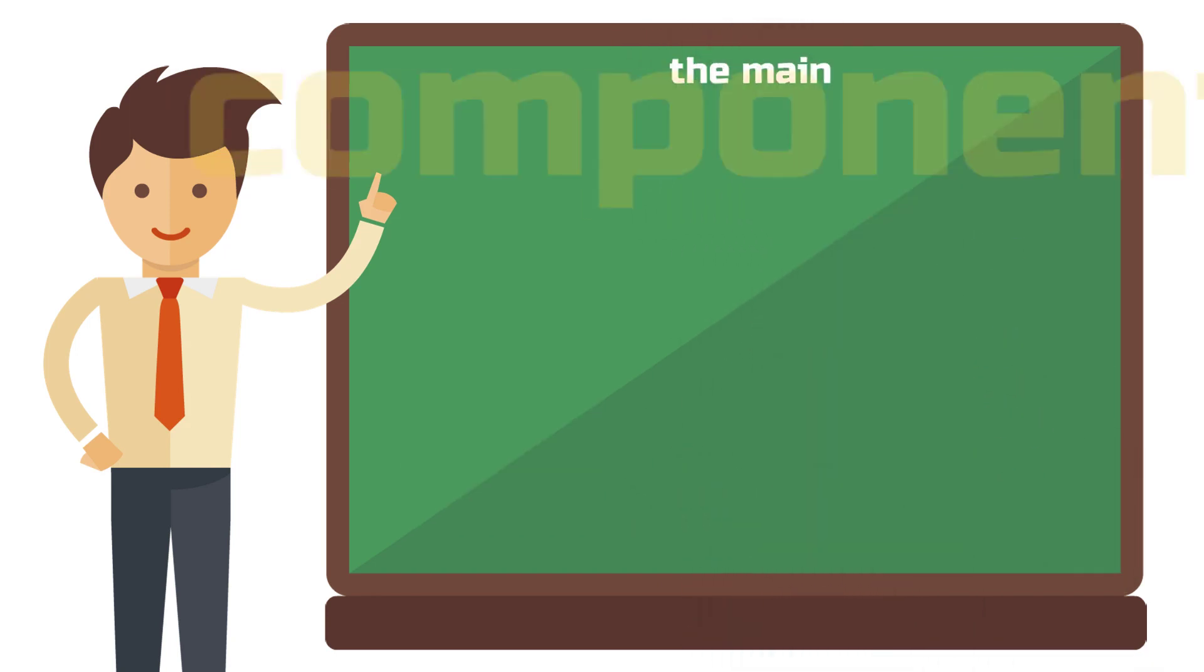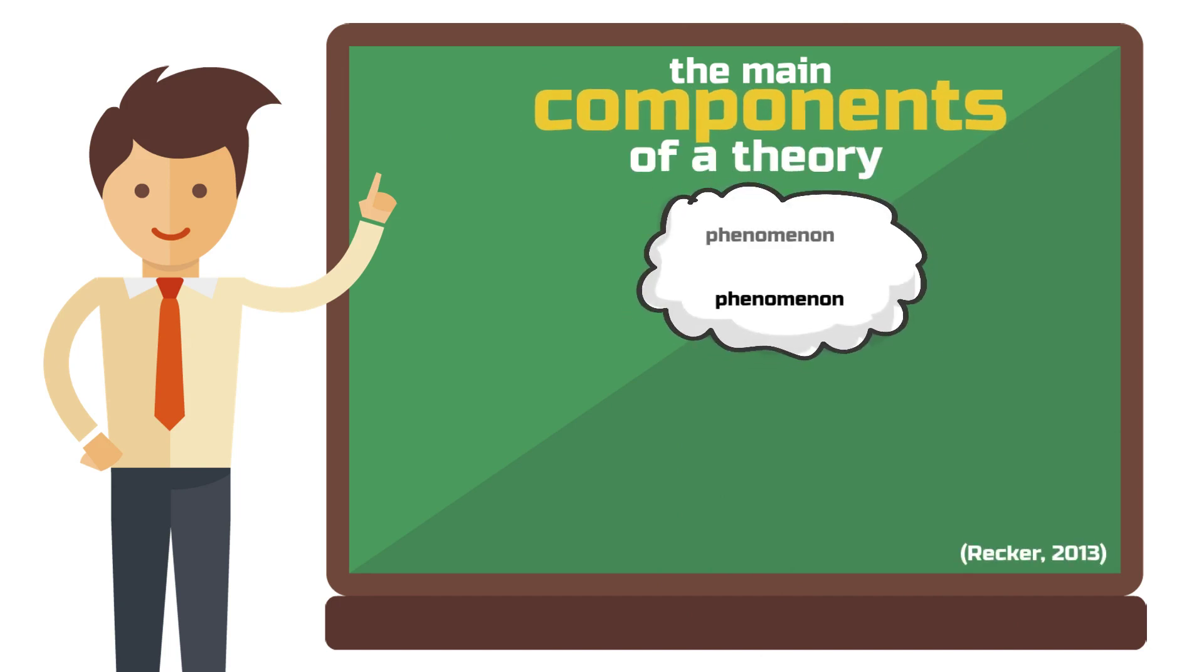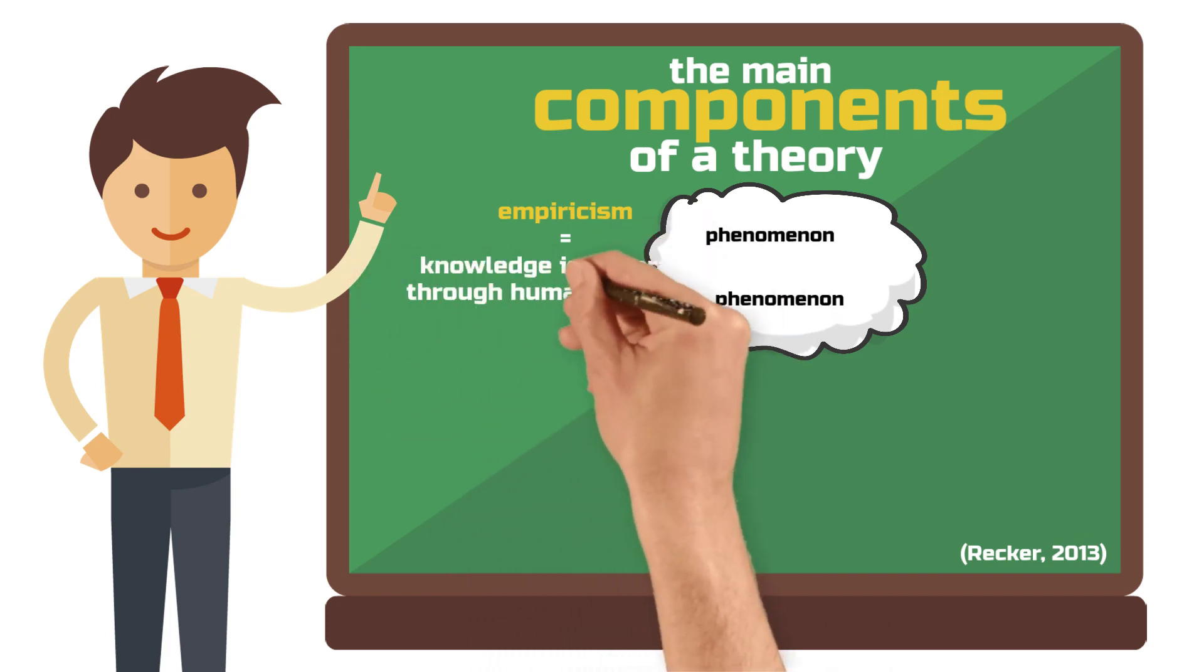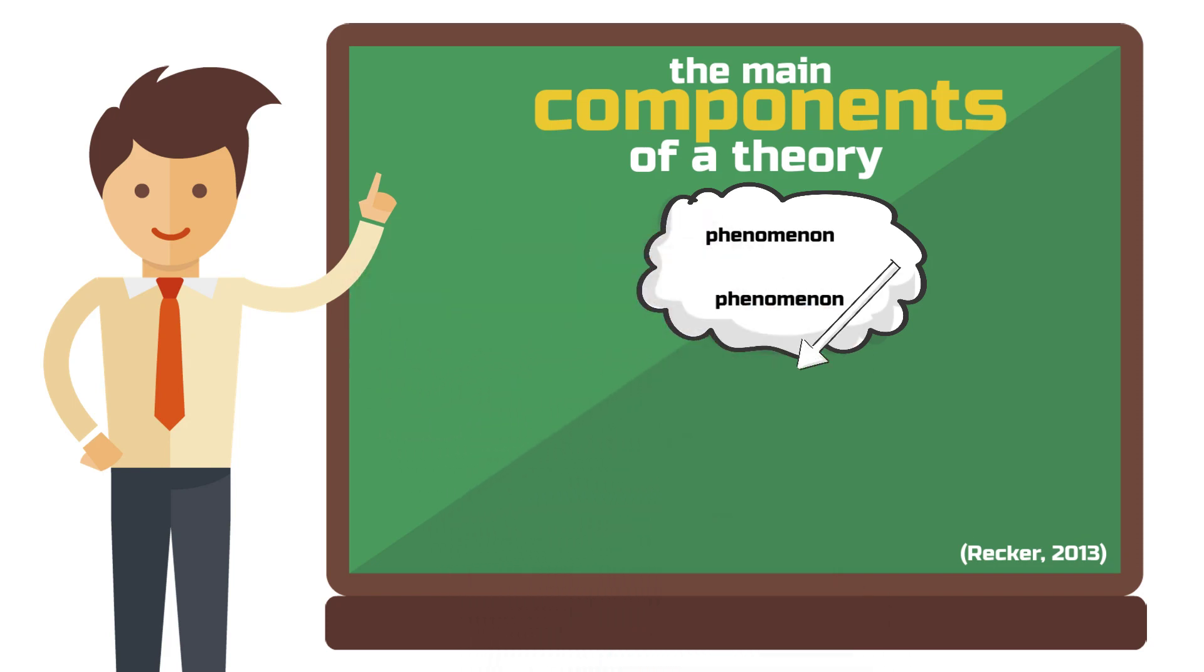The development of a theory most often involves the observation of real-world phenomena. At least when we conduct science based on the idea of empiricism, which presupposes that knowledge is generated through human experience. By means of interpretation and abstraction, we can convert the observed phenomena into theoretical concepts. On a practical level, we can do this during the qualitative analysis of interview data, to name just one example.